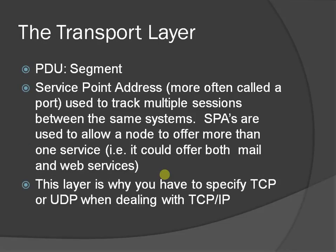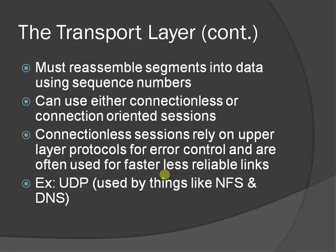The Transport layer PDU is segments. It uses Service Point Addresses, more often called ports, to track multiple sessions between the same systems. Service Point Addresses allow a node to offer more than one service — for example, both mail and web services. This layer is why you must specify TCP or UDP when dealing with TCP/IP. The transport layer must assemble segments into data using sequence numbers and can use either connectionless or connection-oriented sessions. Connectionless sessions rely on upper layer protocols for error control and are used for faster, less reliable links — for example, UDP, used by things like NFS and DNS.